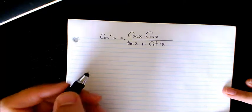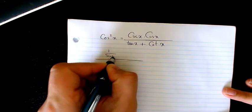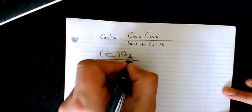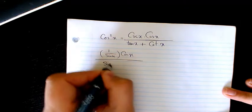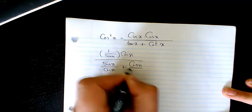So I start from the right hand side, it looks more complicated. So I have 1 over sine x times cosine x. And here I have sine x divided by cosine x plus cosine x divided by sine x.